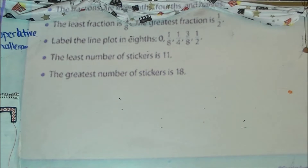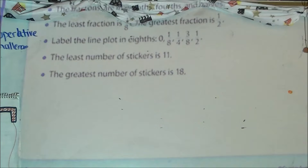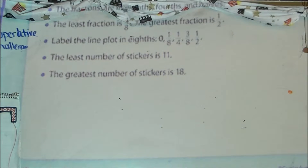You need to rewrite those fractions in terms of 8ths. 1/8 is already perfect. For 1/4: 4 times 2 is 8, so 1 times 2 gives 2/8. Write in your table that 1/4 is equivalent to 2/8. Then for 1/2: 2 times 4 is 8, so 1 times 4 is 4 — 1/2 is equivalent to 4/8. 4 is half of 8. Now you can create the line plot.